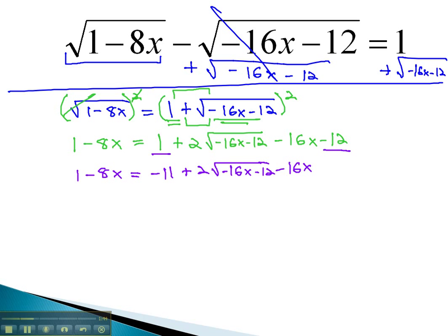Once we've solved for the first square root, now we can clear the second square root by isolating the term with that radical. We can add 16x to both sides and add 11 to get it alone.